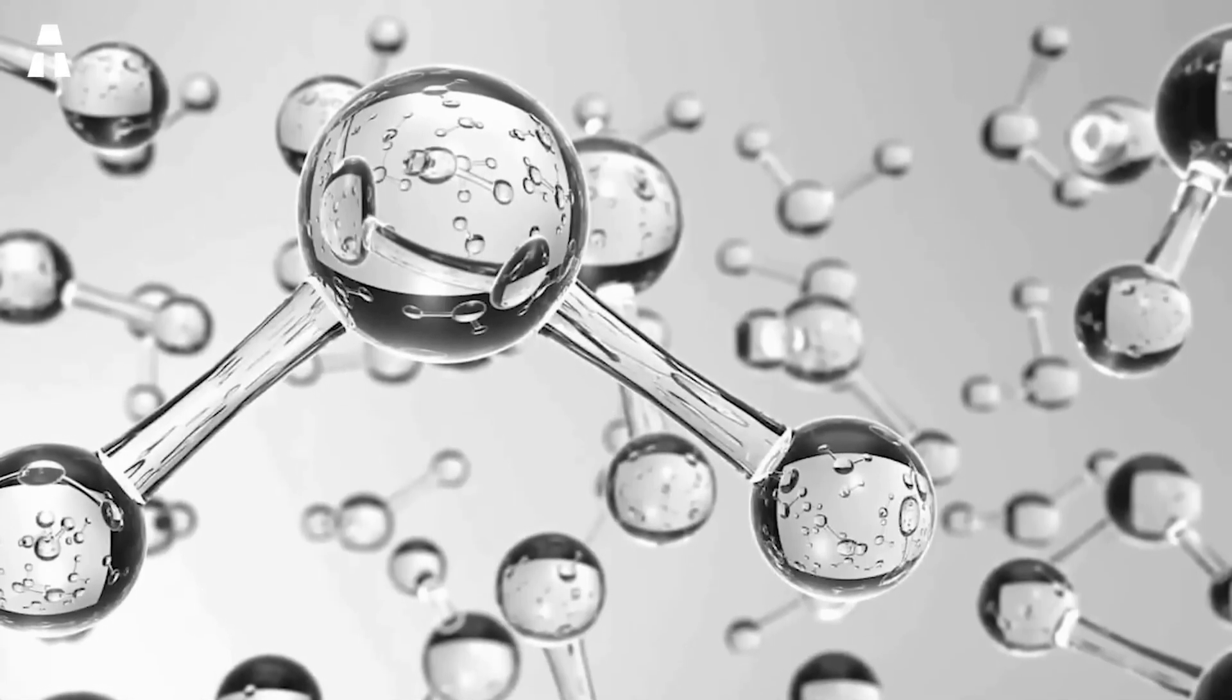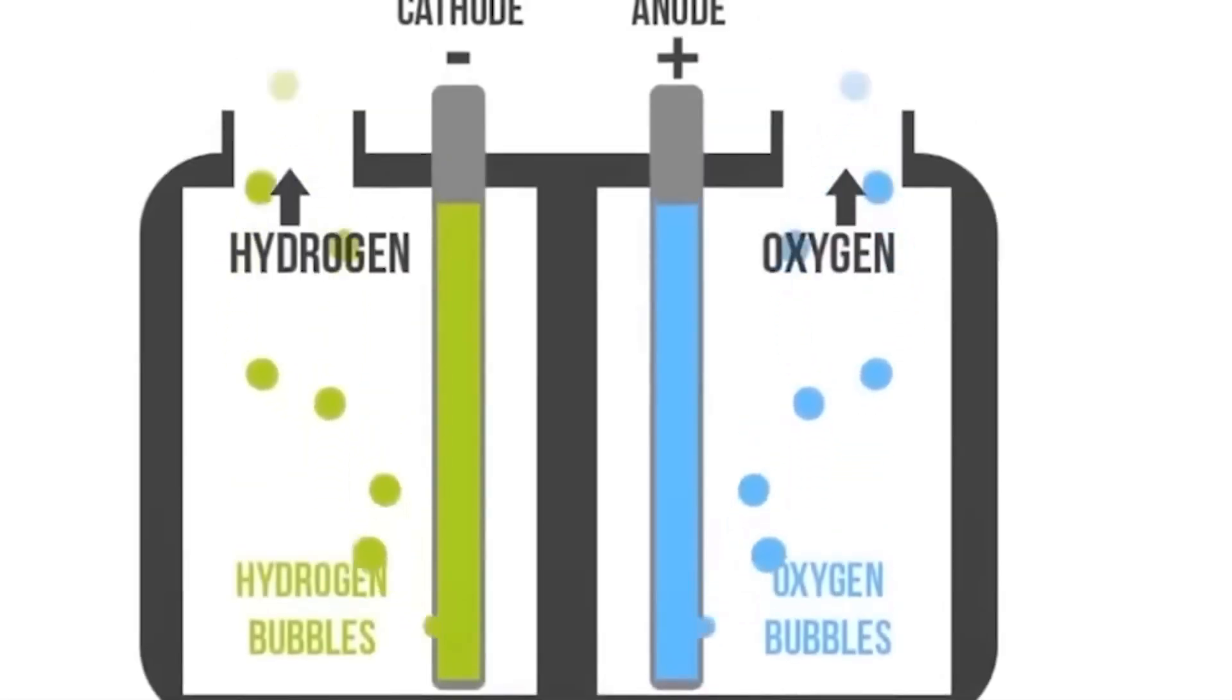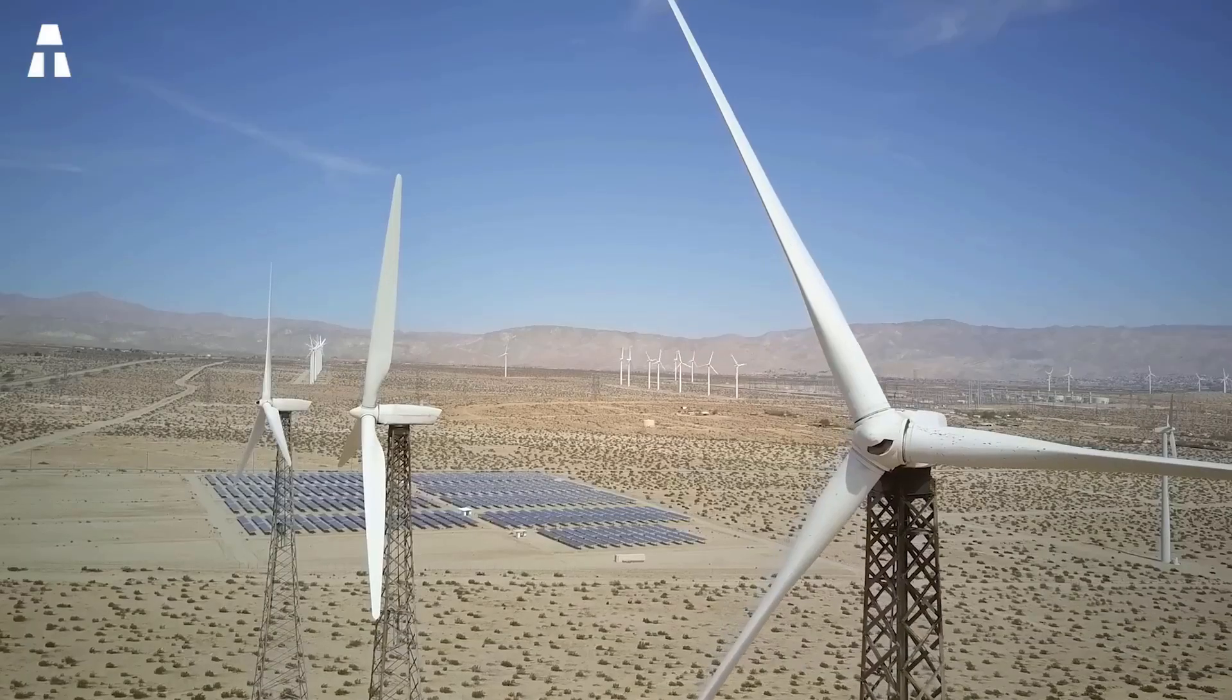There is another method called electrolysis. In other words, the introduction of electricity into water. Oxygen is produced on one side and hydrogen on the other. It doesn't pollute, because the energy used to create the electricity is renewable or of nuclear origin. Therefore, little greenhouse gas is produced.